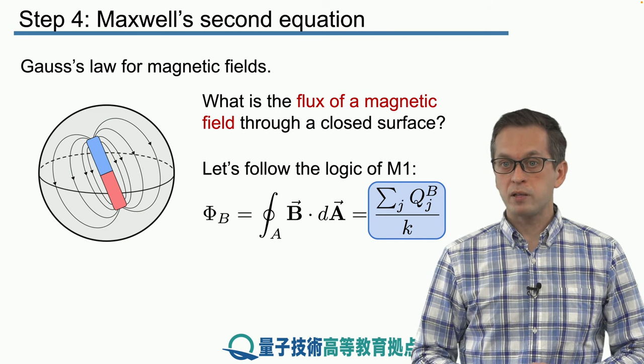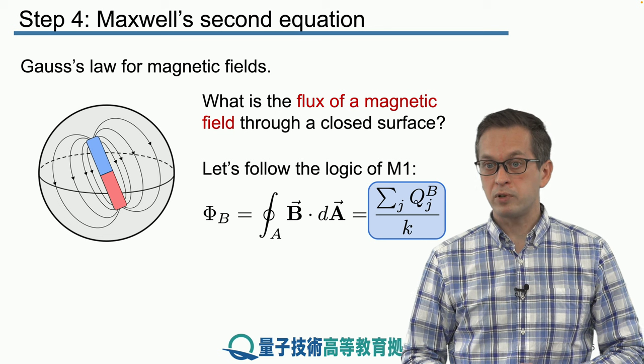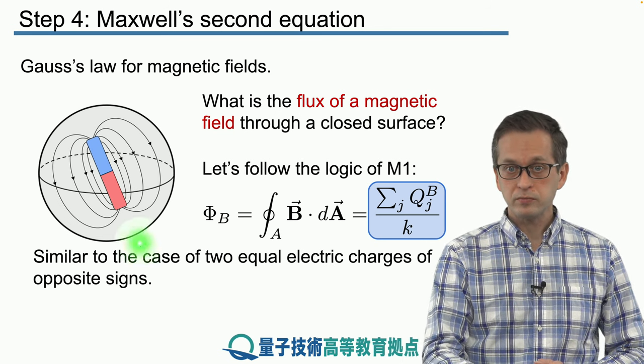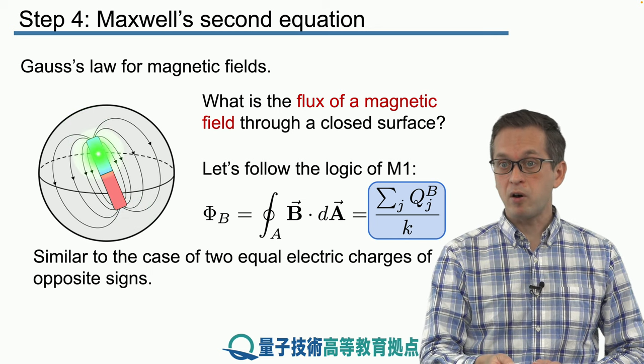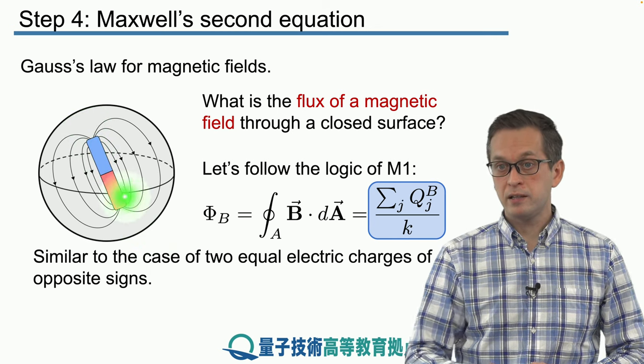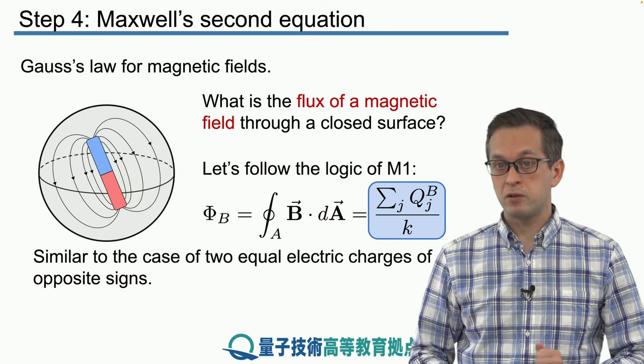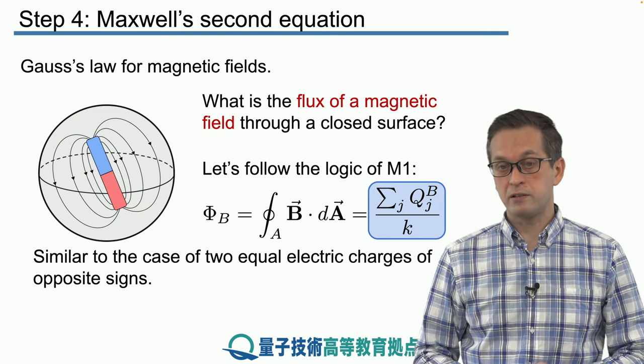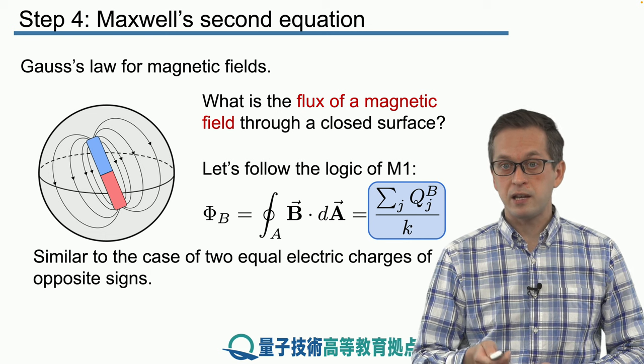Well, this scenario maybe reminds you of what we saw in an example in the previous case when we had two electric charges that had the same size but opposite sign. And in that case, we showed that the flux of the electric field cancelled when we integrate it over the entire surface. And that's exactly the case here as well.